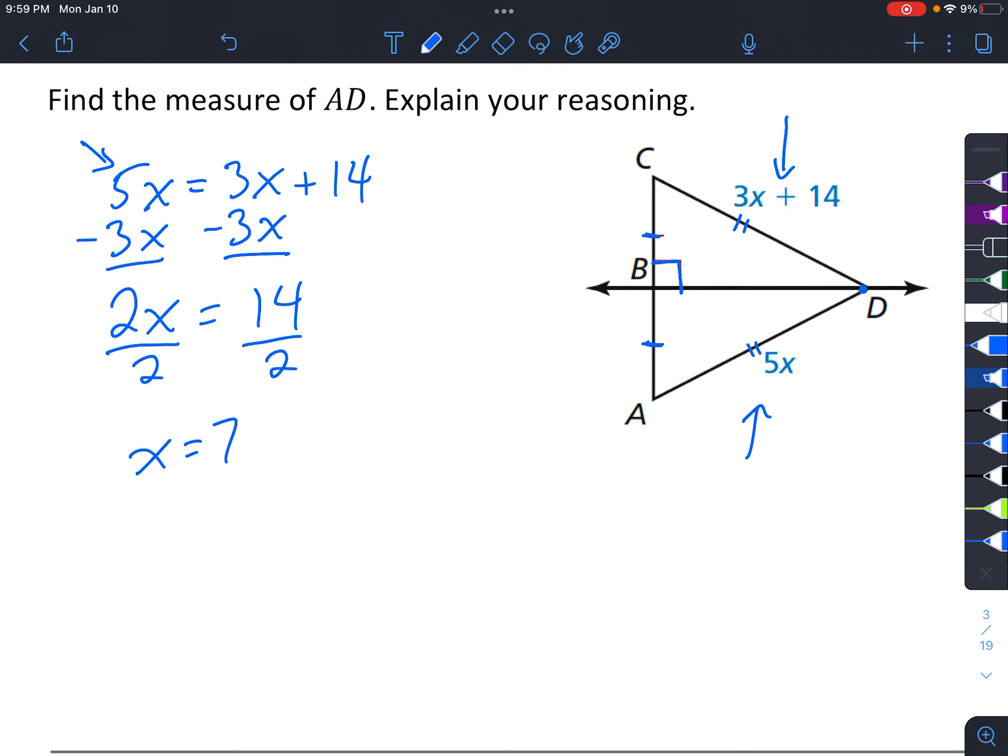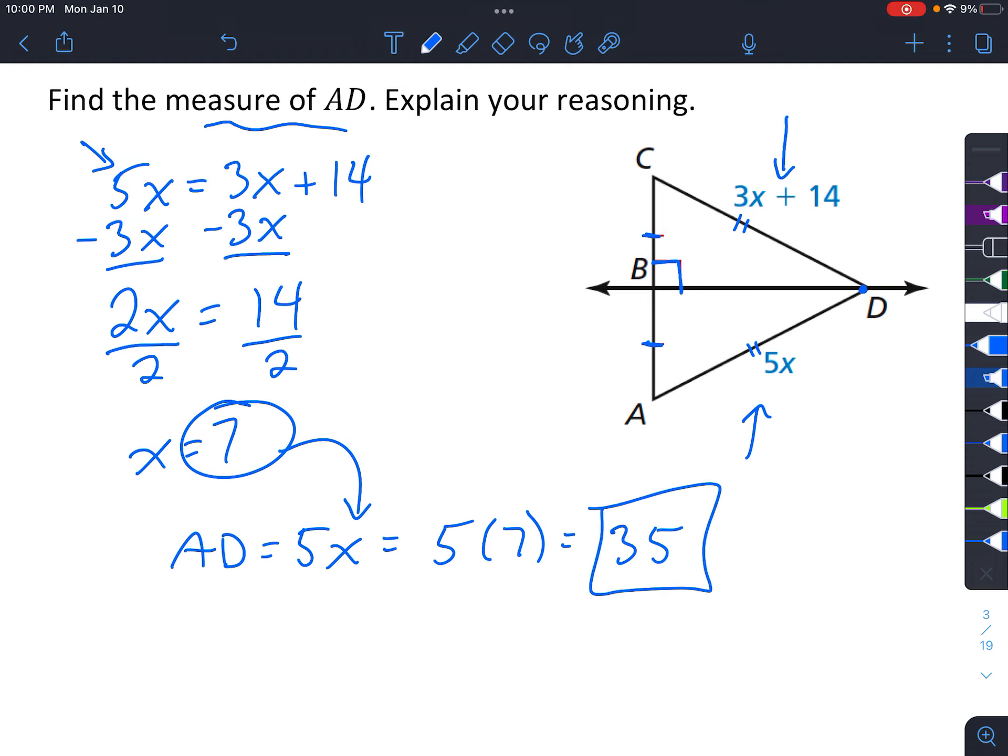because we're trying to find the measure of AD, and AD equals 5X. However, now that we know that X is 7, you can put that in right there. So, we get 5 times 7 equals 35, and that is the measure of AD.